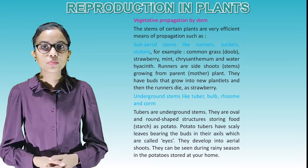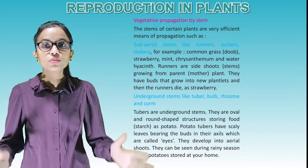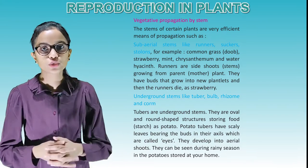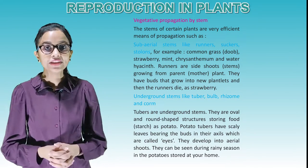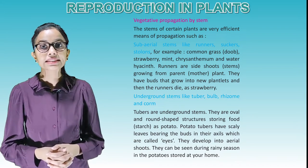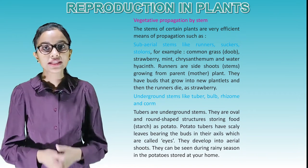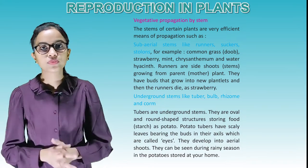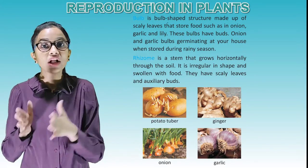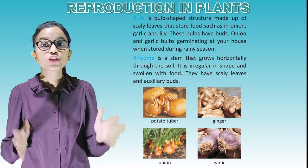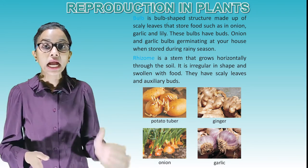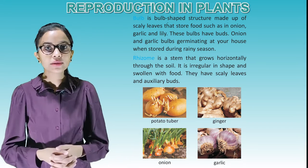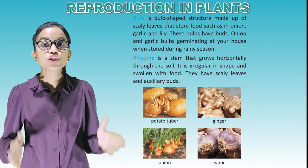Underground stems include tubers, bulbs, rhizomes and corms. Tubers are underground stems — oval and round-shaped structures storing food as starch, such as potato. Potato tubers have scaly leaves bearing buds in their axils called eyes. These develop into aerial shoots and can be seen during rainy season in potatoes stored at home. A bulb is a bulb-shaped structure made up of scaly leaves that store food, such as in onion, garlic and lily. These bulbs have buds, and onion and garlic bulbs germinate when stored during rainy season.